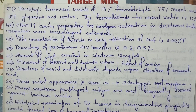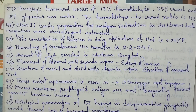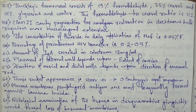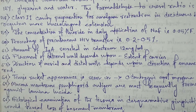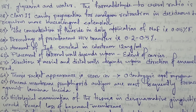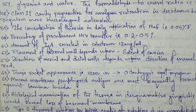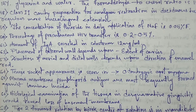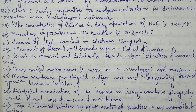Amount of IgA secreted in colostrum is 12 mg per ml. Placement of external wall depends upon extent of caries. Direction of mesial and distal walls depends upon direction of enamel rod.